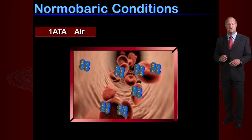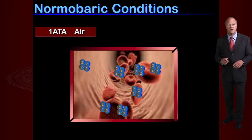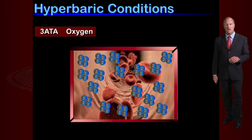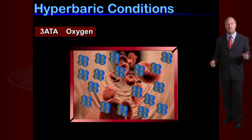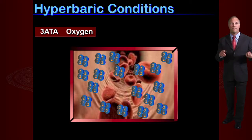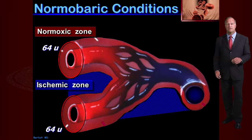What are the mechanisms of action for hyperbaric therapy? Under normal baric conditions at one atmosphere breathing air, essentially all of our oxygen is bound to hemoglobin, with very little floating dissolved in the plasma. However, under hyperbaric conditions at three atmospheres, we don't change hemoglobin binding, but we do force oxygen to physically dissolve into the plasma to the tune of nearly six volume percent.